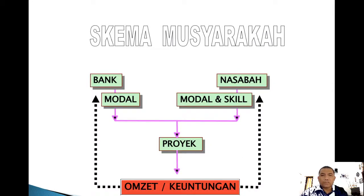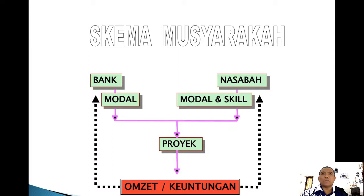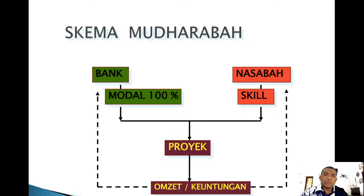Musyarakah: bank dan nasabah sama-sama memiliki modal. Nasabah memiliki modal atau skill, bank juga memiliki modal, akhirnya mereka bersatu mendirikan suatu proyek dan menentukan omset atau keuntungan yang dibagi menjadi dua antara nasabah dan bank. Mudharabah hampir sama, bedanya hanya bank yang modalnya 100%, sedangkan nasabah hanya modal dalam bentuk keterampilan atau skill. Mereka mendirikan proyek bersama dan hasilnya dibagi menjadi dua.